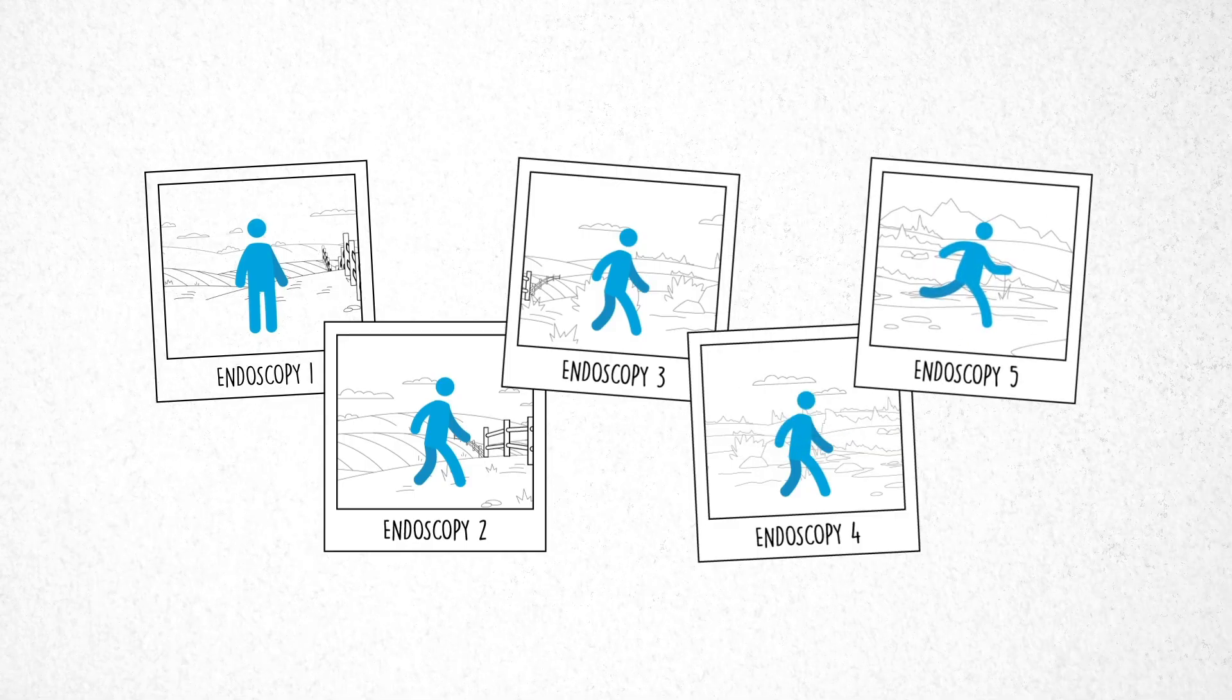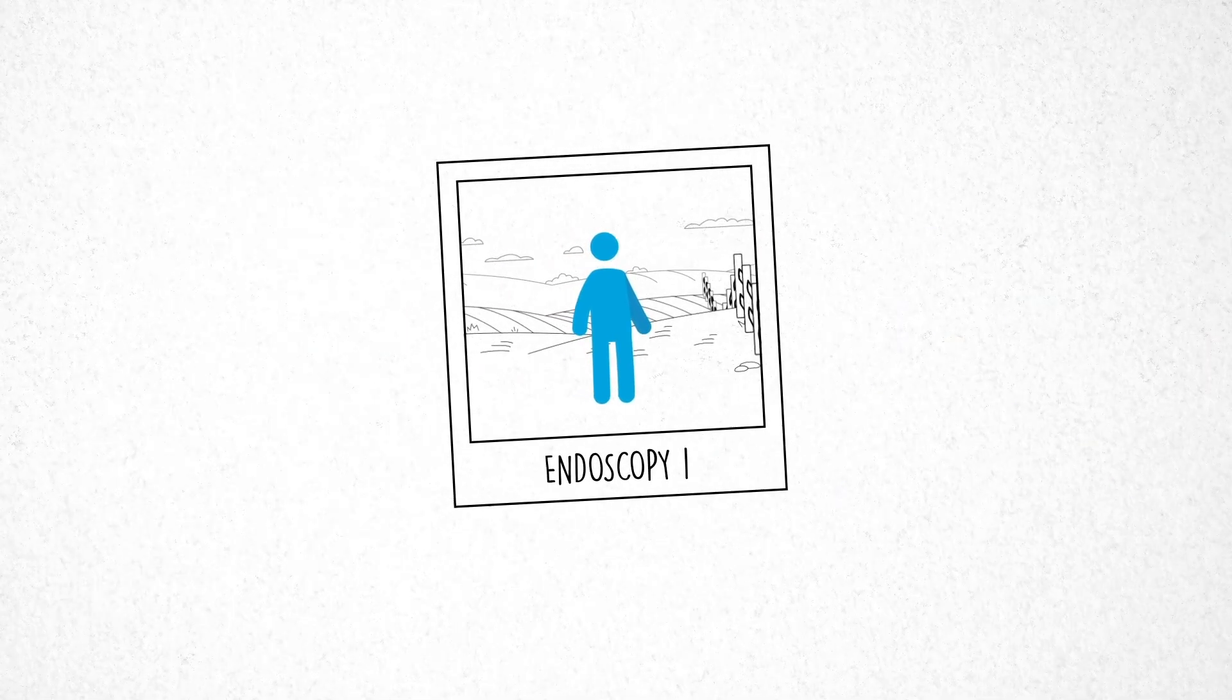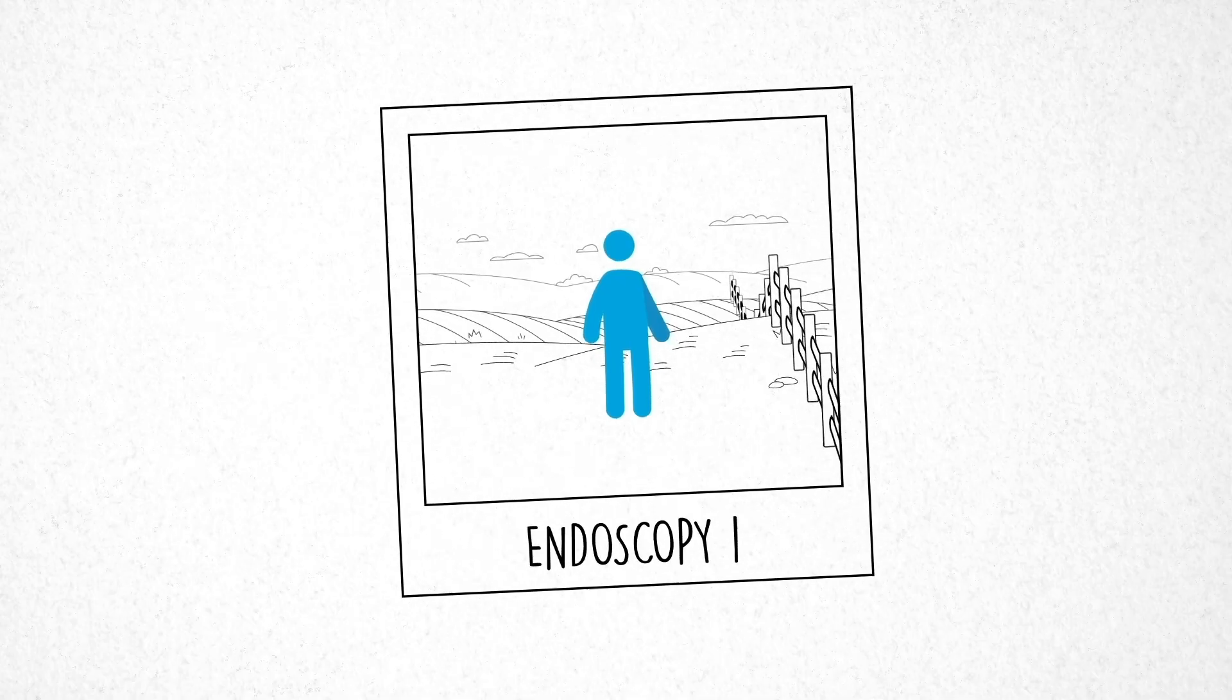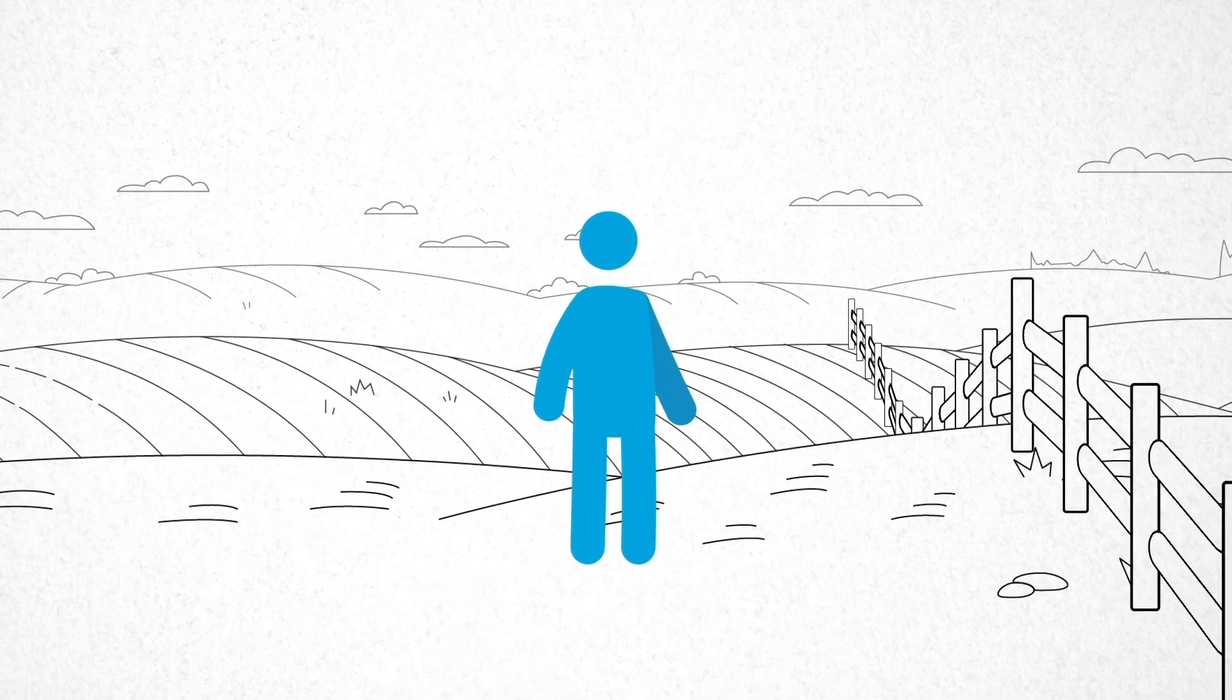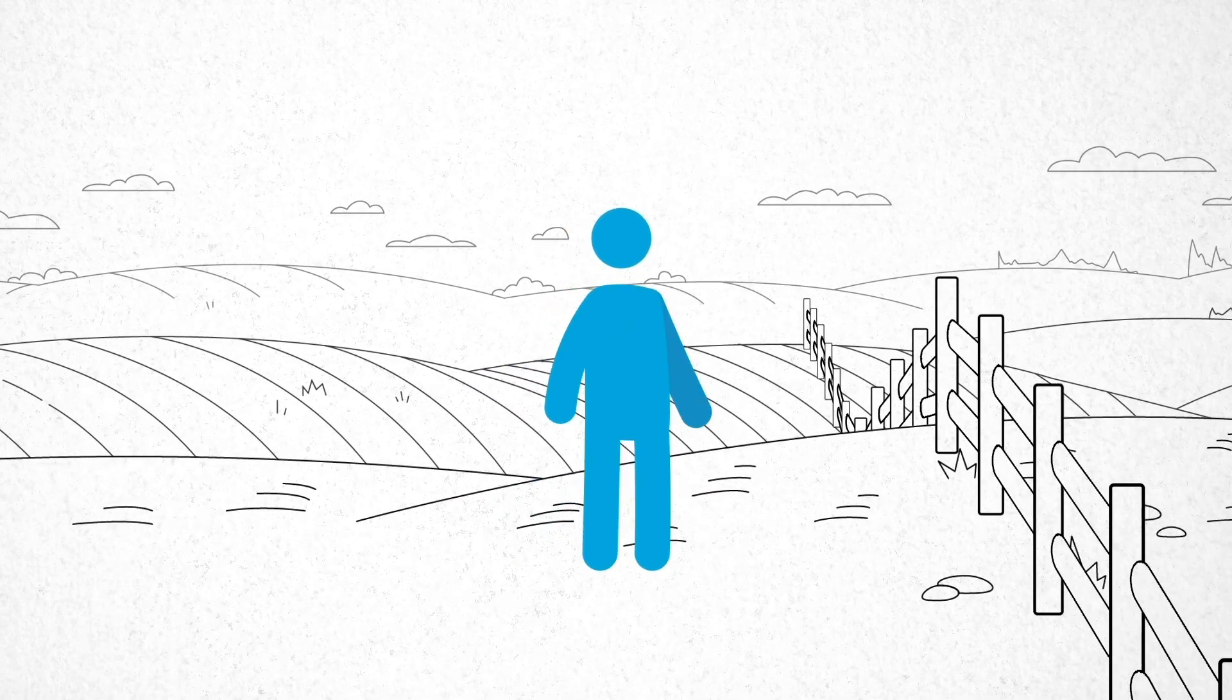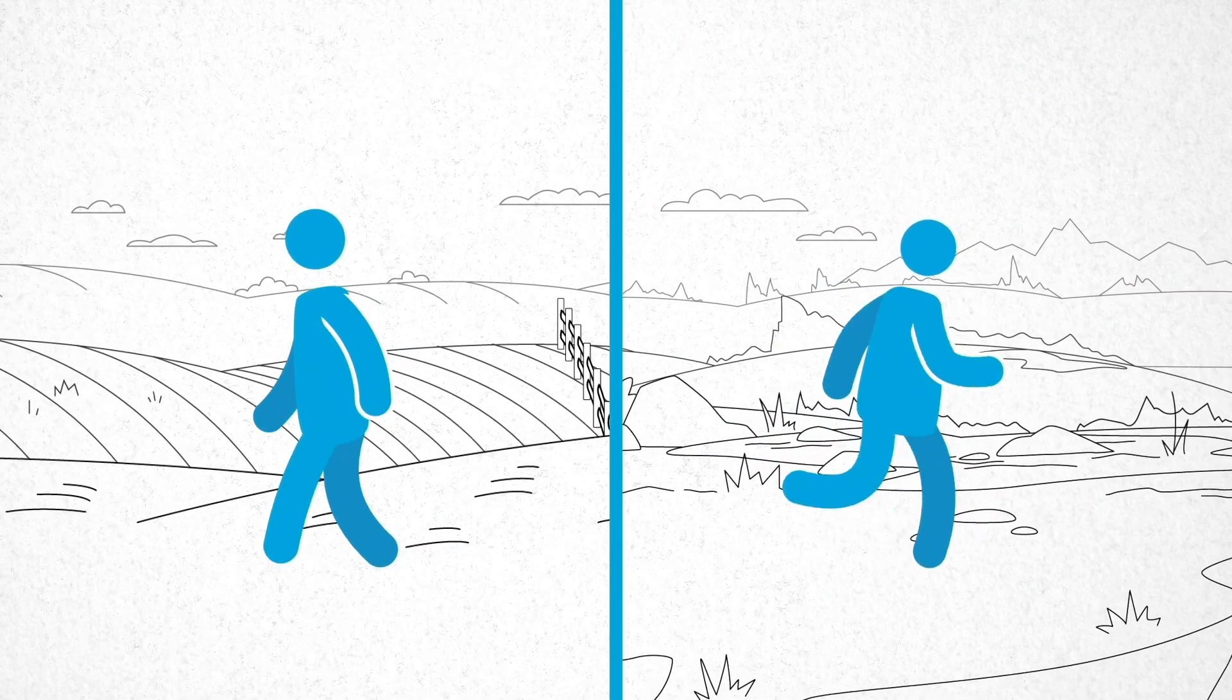closer to the fence and the cliff. With TissueCypher, that static picture becomes dynamic where we can clearly see if you are safely moving about the field or if you are heading dangerously towards the cliff.